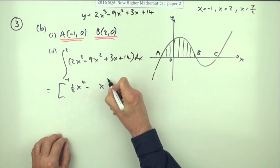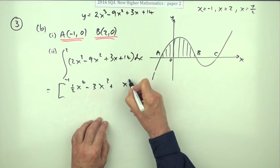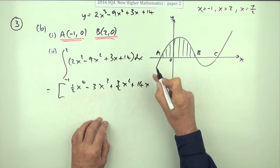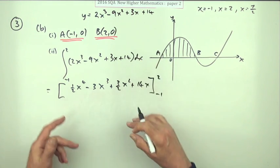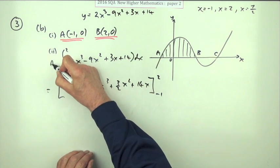Up to 3 divide by 3, 3 into 9 goes 3. Up to 2 divide by 2, well it doesn't, so I'm just stuck with that. And that just becomes 14x. That gets evaluated from negative 1 to 2.